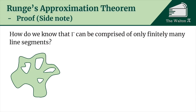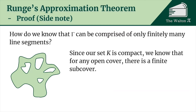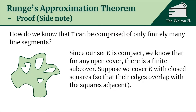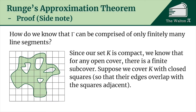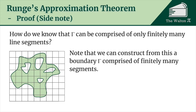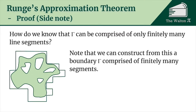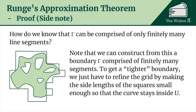Why can the loop be made of only finitely many line segments? We can cover K with any open cover and extract a finite subcover. Suppose we cover K with closed squares whose edges overlap with adjacent squares. We can then construct a boundary comprised of finitely many segments. If we want a tighter boundary, we just refine the grid by making the squares smaller. Those closed squares are not an open cover, but taking an open neighborhood of them gives an open cover.